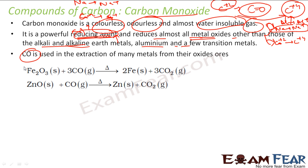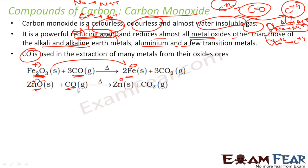Carbon monoxide is used for extraction of many metals from their ores. For example, CO reduces Fe₂O₃ — iron goes from oxidation state +3 to 0 — giving you iron metal. Similarly, ZnO is reduced: zinc goes from +2 to 0, giving you zinc metal. Using this reducing property, carbon monoxide is widely used for extraction of metals, since most metals exist in oxide form.